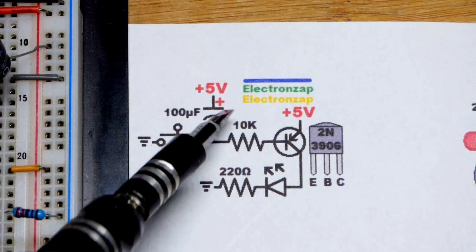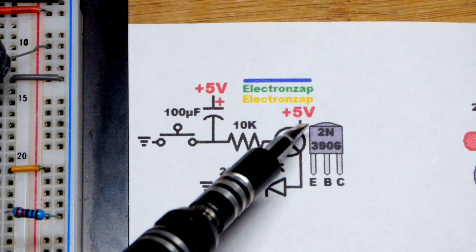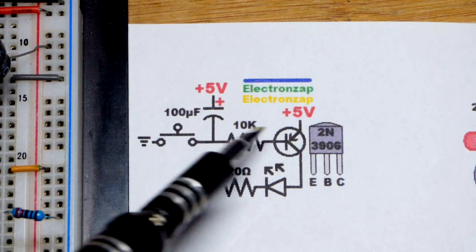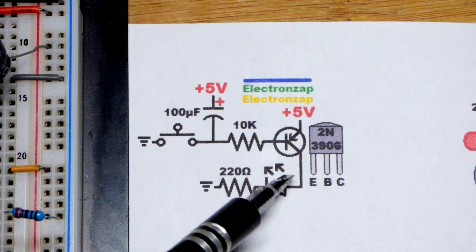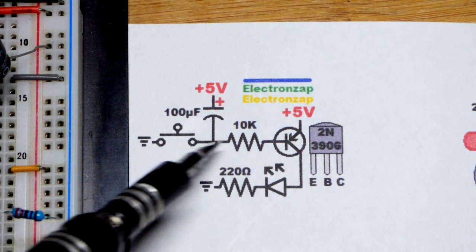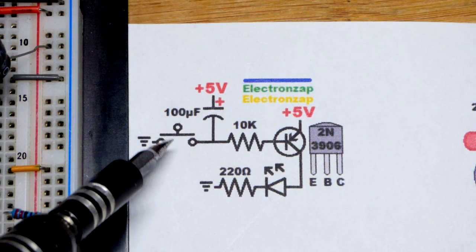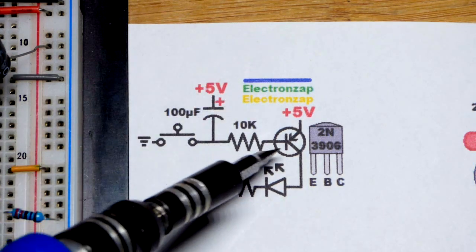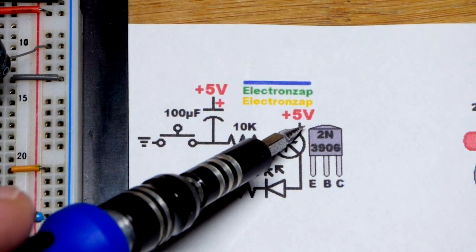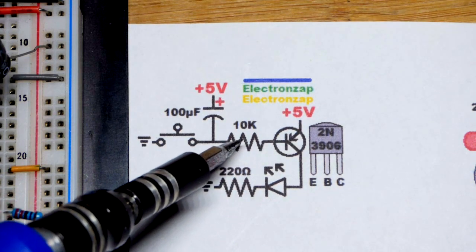When the switch is open, the capacitor is discharged. There is no current flow from base to emitter, so no current flow from collector to emitter. When we close the switch, since we have a 10 kilo ohm resistor, the capacitor instantly charges and current instantly starts flowing from emitter to base.